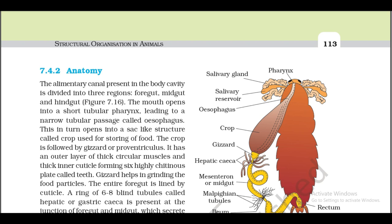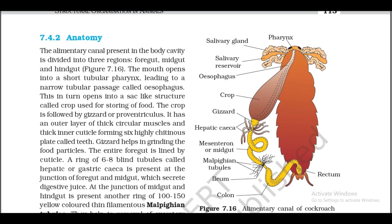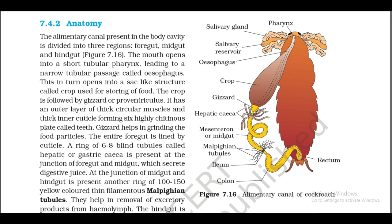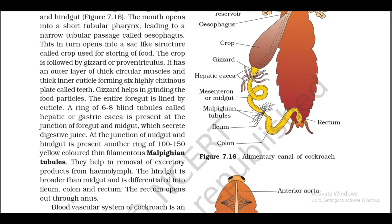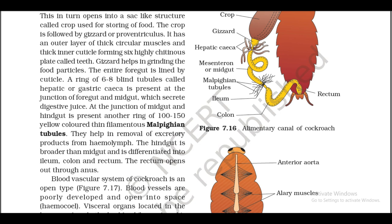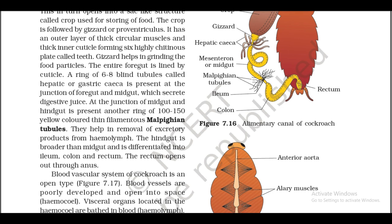7.4.2: Anatomy. The alimentary canal present in the body cavity is divided into three regions: foregut, midgut, and hindgut (figure 7.16). The mouth opens into a short tubular pharynx, leading to a narrow tubular esophagus, which in turn opens into a sac-like structure called the crop, used for storing food. The crop is followed by the gizzard or proventriculus, which has an outer layer of thick circular muscles and a thick inner cuticle forming six highly chitinous plates called teeth. The gizzard helps in grinding food particles. The entire foregut is lined by cuticle. A ring of six to eight blind tubules called hepatic or gastric caeca is present at the junction of the foregut and midgut, which secrete digestive juice.